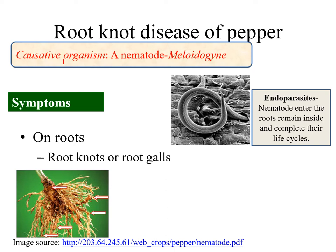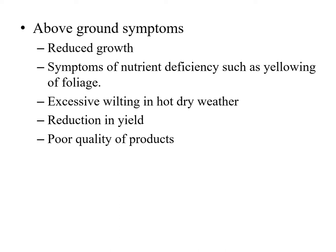Root knots or root galls are enlargements of the roots caused by feeding of nematodes. Other major symptoms include above-ground symptoms such as reduced growth, symptoms of nutrient deficiency such as yellowing of foliage, excessive wilting in hot dry weather, reduction in yield, and poor quality products.